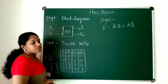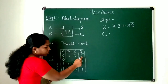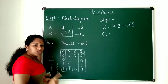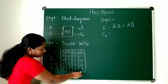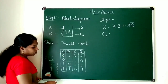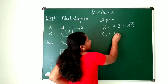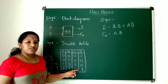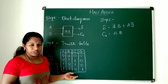Next, we write the expression for C₀, the carry out. Observing the carry column, there is only one condition with a true value. The corresponding values are A=1 and B=1. So C₀ = A·B. All other conditions are 0 and need not be taken. That's how we extract expressions from the truth table.